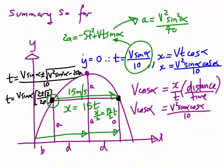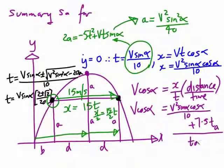Then we have to add in the distance travelled by the bird: 7.5t, that is 7.5 lots of the time to reach height a, divided by t.